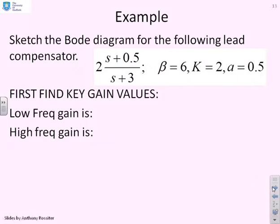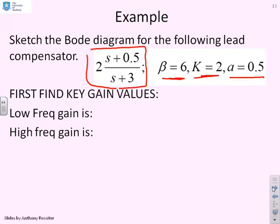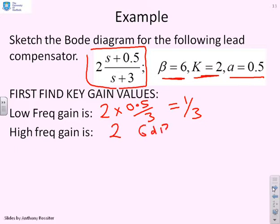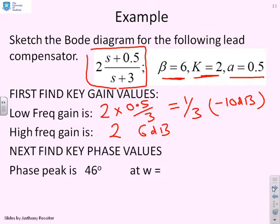Let's do some sketching. Sketch the Bode diagram for the lead compensator 2 times (S plus 0.5) over (S plus 3). In this case, beta is 6, k is 2, and A is 0.5. Let's first find the key values. The low frequency gain is going to be 2 times 0.5 over 3, which is one third — of the order of minus 10 decibels. The high frequency gain is going to be 2, which is about 6 decibels. Because beta is 6, looking at the table, the maximum phase is 46 degrees.